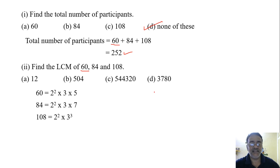LCM is the product of all the prime factors involved with the highest power. So 2, 3, 5, and 7 are there. The highest power: 2², 3³, 5, and 7. So that will be the LCM. If you multiply all this you get 3780. The correct option is D.